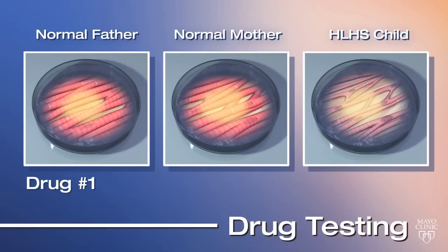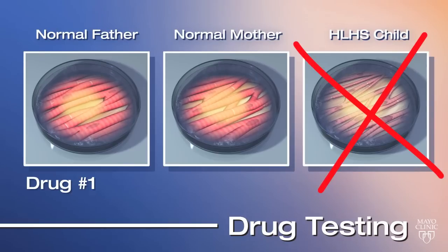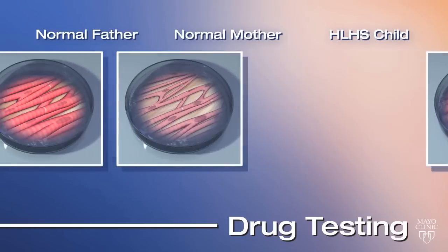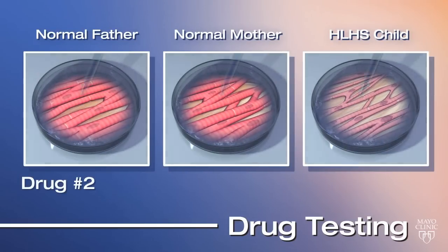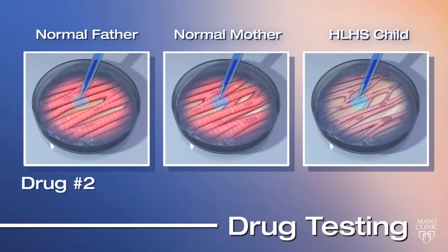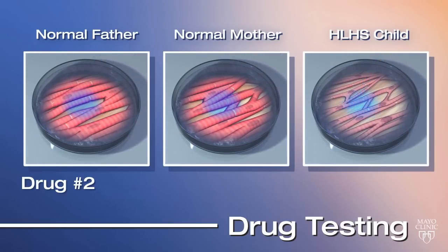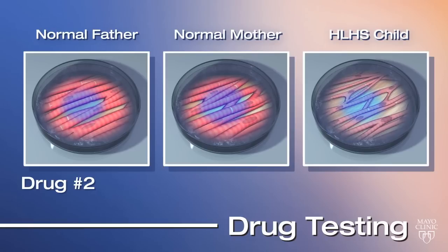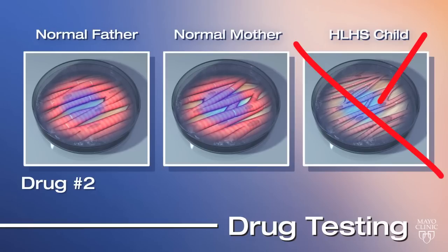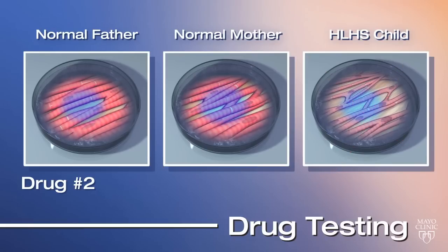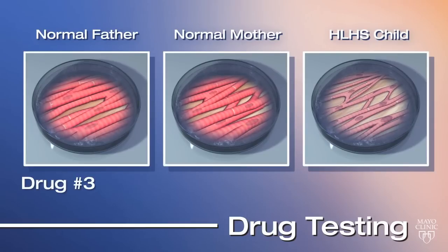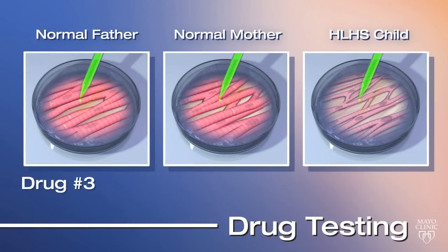Based on the genetic profile of individual HLHS families, we have tested a number of medications that were predicted to be beneficial. Many of the medications were not helpful. However, one of the treatment options did indeed work as predicted to make the heart muscle of the individual with HLHS stronger and better without negatively affecting the heart muscles of the parents.